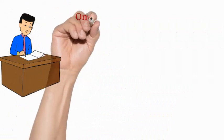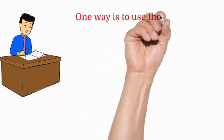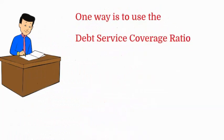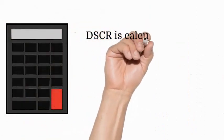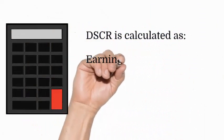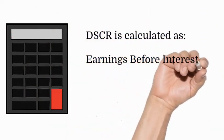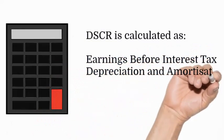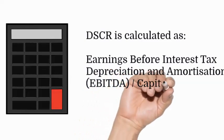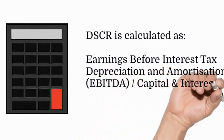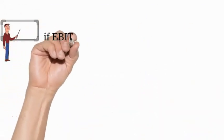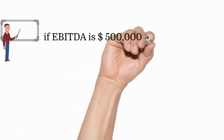Thankfully, there is a way that we can do this. It is known as the Debt Service Coverage Ratio. What exactly is the Debt Service Coverage Ratio, or DSCR? Well, it is calculated as the Earnings Before Interest, Tax, Depreciation and Amortization (EBITDA) divided by the capital and interest payments.